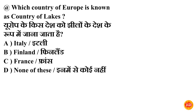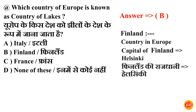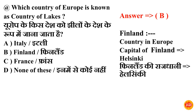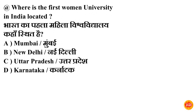Next question: which country of Europe is known as the country of lakes? Europe ke kis desh ko jhilon ki desh ke roop mein jana jata hai? Option B is correct — Finland. Europe mein Finland ko jhilon ki desh ke roop mein jana jata hai. Finland ek European country hai aur Finland ki rajdhani hai Helsinki.